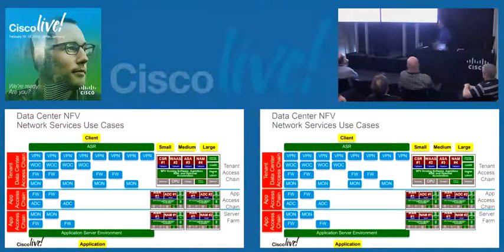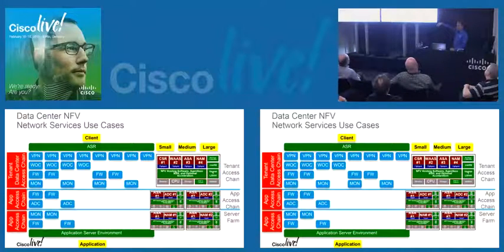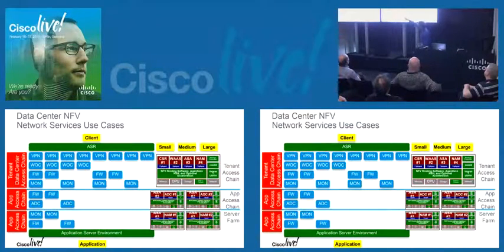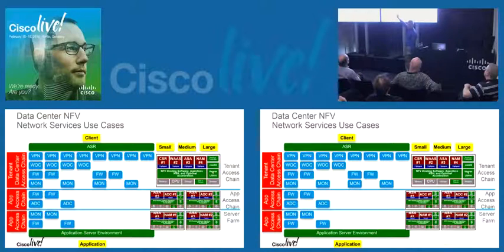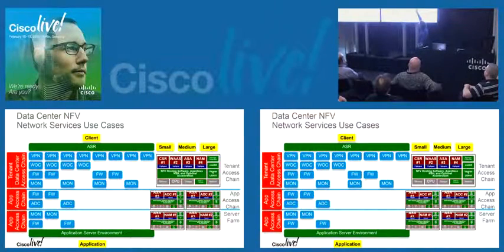CSP is data center focused, although you could use it in other places. We looked at virtual services in the data center earlier. These are pretty much the standardized combo of any data center — you're coming in, terminating in a VPN, grand acceleration, a WAX (WAN optimization concentrator), firewall, monitor — that's your application access chain, which could be x86 or WAN termination, application access, and then east-west.